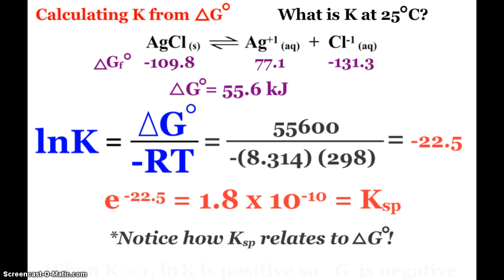So when we plug in using 55,600 joules divided by negative RT and then use the reverse natural log of that we end up with 1.8 times 10 to the negative 10th which is the Ksp value for silver chloride at 25 degrees Celsius. And that did relate to our delta G.